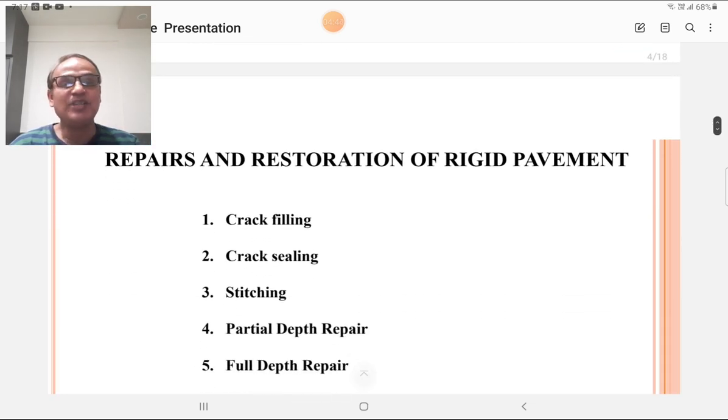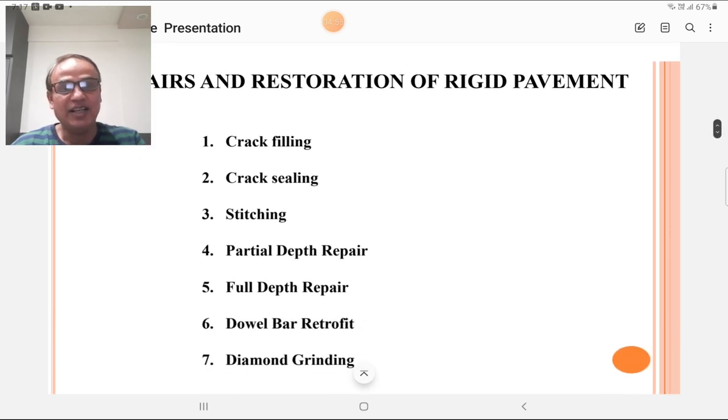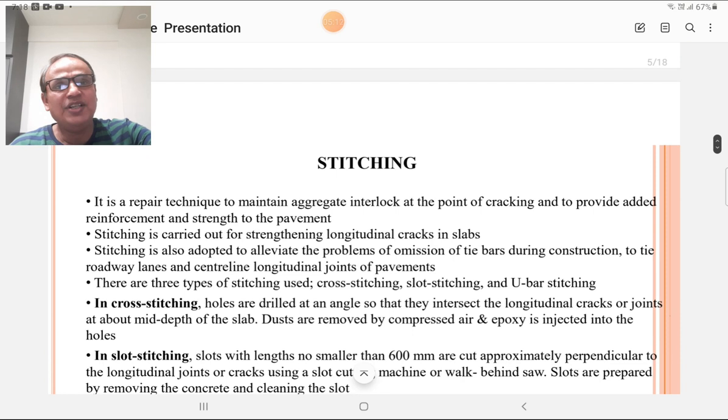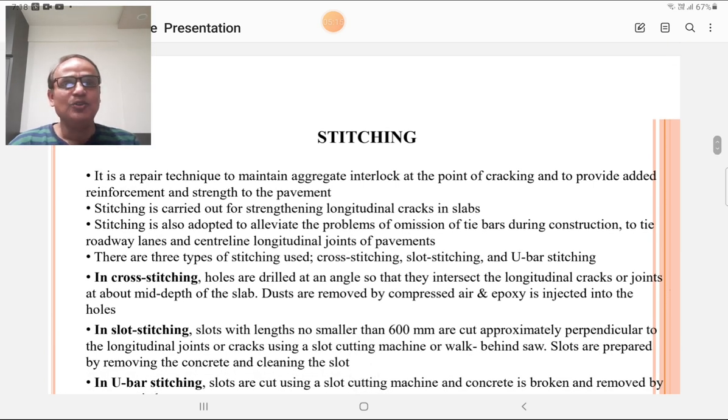Repair and restoration of rigid pavement includes crack filling when the crack is small, crack sealing, stitching, partial depth repair, full depth repair, dowel bar retrofit, and diamond grinding. These are different techniques to overcome various failures of concrete pavement. We are going to discuss in detail the stitching of concrete. Stitching is a repair technique to maintain aggregate interlock at the point of cracking and to provide added reinforcement and strength to the pavement. It provides interlocking of aggregate and reinforcement to provide strength to the concrete.